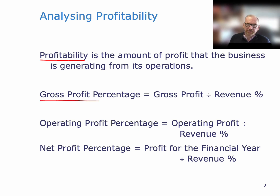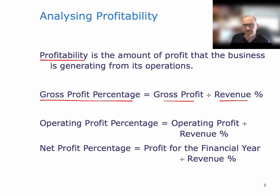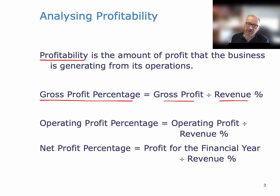The first one is the gross profit percentage, and that is equal to gross profit divided by revenue. Both of these measures are from the income statement. At the top of the income statement you start off with revenue minus cost of goods sold equals gross profit. So the gross profit percentage measures the profit that the company is generating from its operations, only accounting for the costs that have to do with either making or buying in the product — it only accounts for the cost of goods sold. It doesn't account for other expenses.